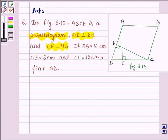If AB is equal to 16 cm, AE is equal to 8 cm and CF is equal to 10 cm, find AD.